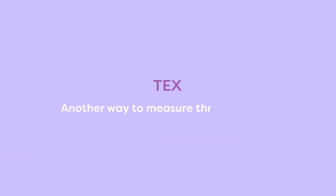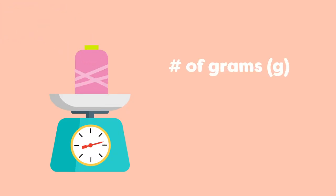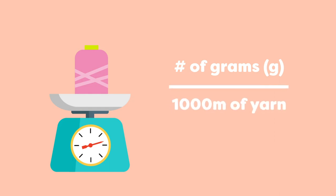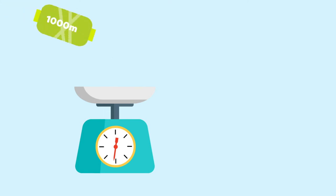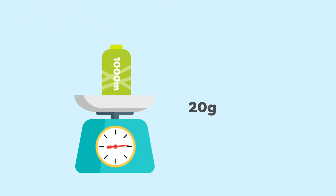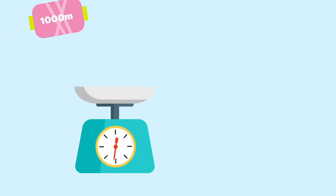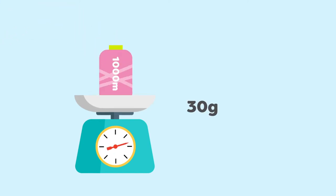Tex. Another way to measure thread thickness is by Tex. This is a more technical way to measure thread, as opposed to weight. It is defined by how many grams 1000 meters of that yarn weighs. So for example, if 1000 meters of a certain thread weighs 20 grams, then it's Tex 20. Or, if 1000 meters of the thread weighs 30 grams, then it's Tex 30.